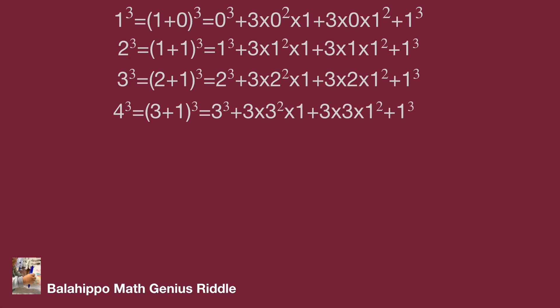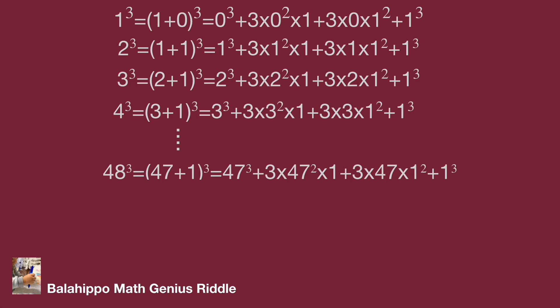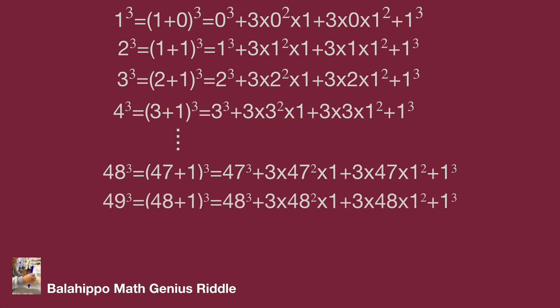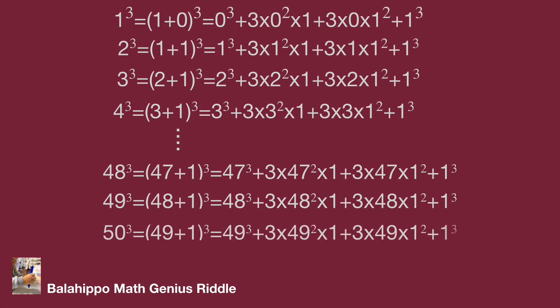The expanded items are shown as the video list. Increasing the number: quantity (47 plus 1) cubed equals 48 cubed; quantity (48 plus 1) cubed equals 49 cubed; and quantity (49 plus 1) cubed equals 50 cubed. So 50 cubed equals 49 cubed plus 3 times 49 square times 1 plus 3 times 49 times 1 square plus 1 cubed.